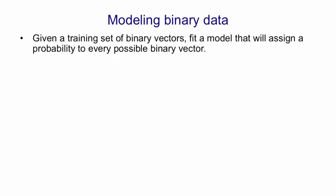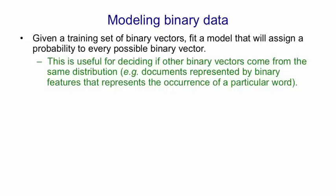So given a set of binary training vectors, they can use the hidden units to fit a model that assigns a probability to every possible binary vector. There are several reasons why you might like to be able to do that.